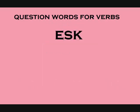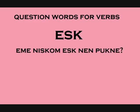More complex questions about verbs will require the word 'esk', which doesn't really translate into English. 'Esk' is used with unusual verb forms to show the proper relationships of nouns to it. For example, 'what are you doing to the cat?' would be 'eme niskom eskenen pukne'. Since 'eme' already functions as the object for 'niskoi', there can't be another object, so 'esk' is used followed by the word for cat in the accusative.